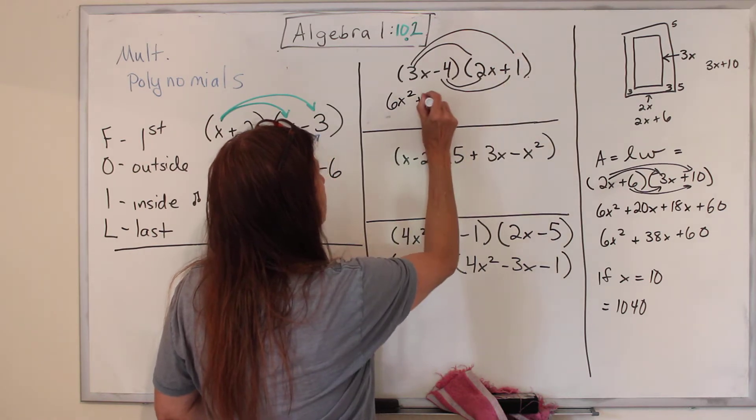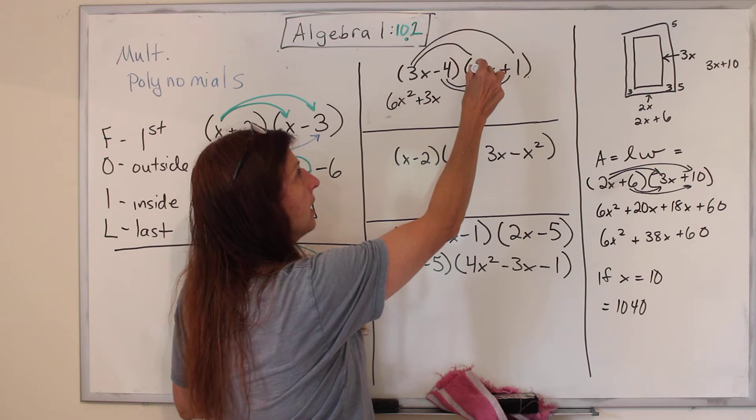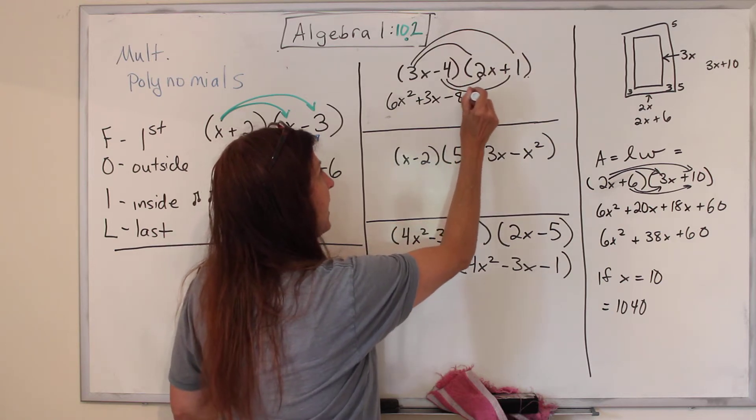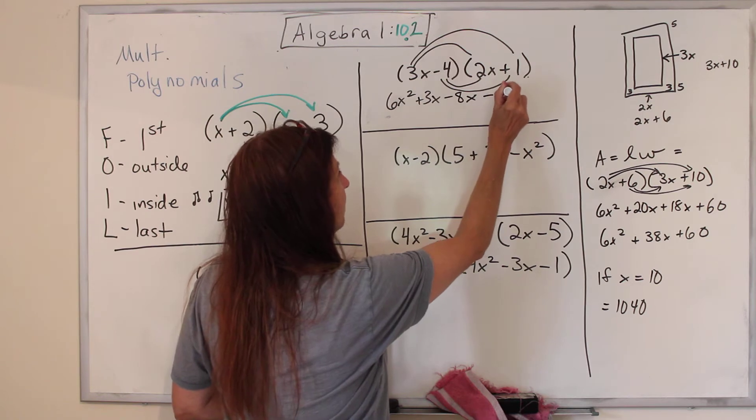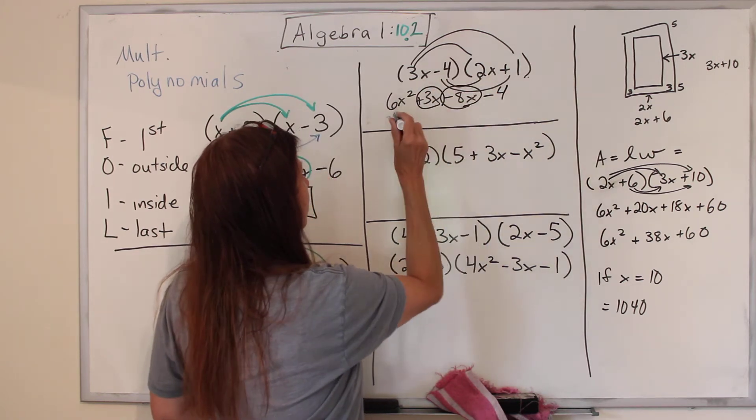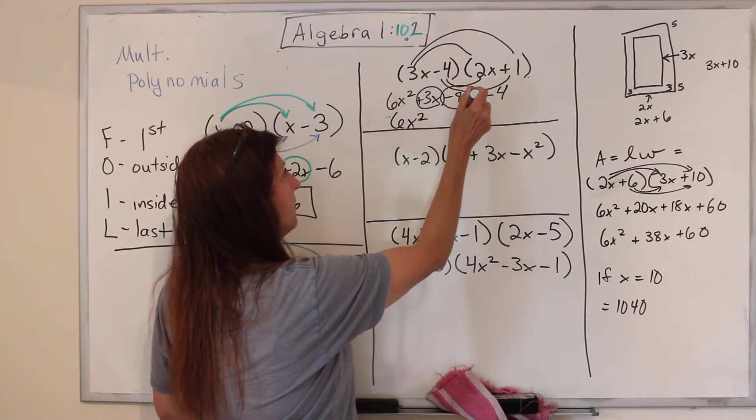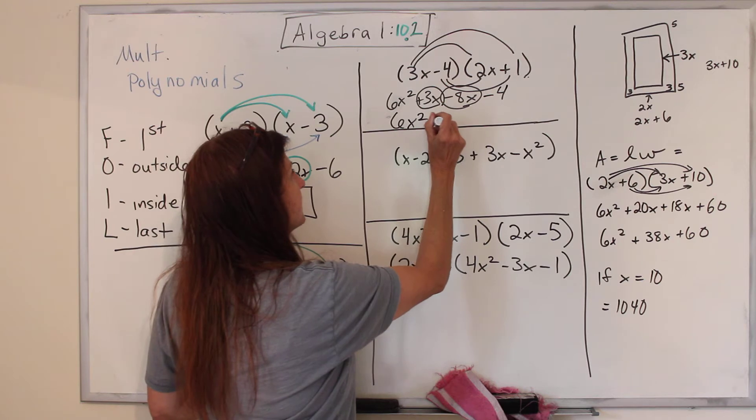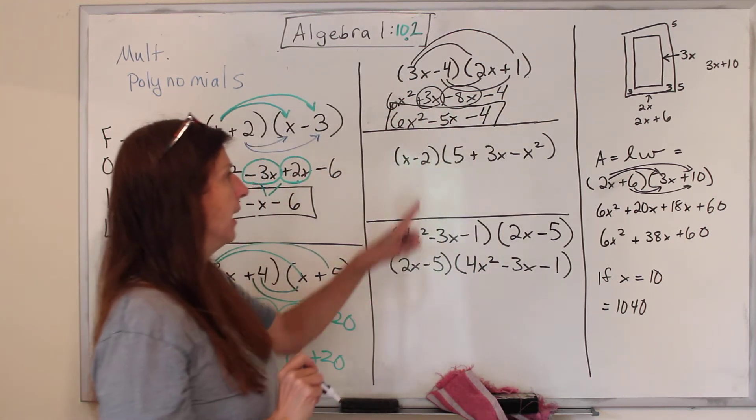3x times 1 is plus 3x. Negative 4 times 2x is negative 8x. Negative 4 times 1 is negative 4. We gather these two up. 6x squared. Negative 8x plus 3x is negative 5x minus 4. Ta-da.